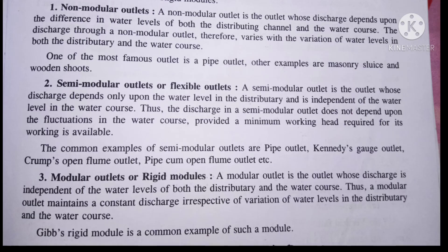So sabse pahla hai non-modular outlet. Ab hum dekhenge ki ek outlet pipe kis tarah se non-modular aur semi-modular outlet ke liye kaam karti hai. Is outlet mein paani water course se aata hai, aur water course mein paani canal se aayega. Ab non-modular outlet par paani depend karta hai water course ke level par. Matlab agar water course mein jo water level hai woh agar zyada hoga, to outlet par paani kam aayega. Aur agar water course ka jo level hai, woh kam hai, to outlet par paani zyada aayega — ye opposite hoga. So jo farmers hote hain, agriculturists hote hain, woh kya karte hain ki water course ka jo level hai woh decrease kar lete hain, jis se outlet par paani zyada aata hai. Isse kya hota hai ki canal ke outlet se paani zyada niklega, aur agar jahakar woh tail par, uski kami bhi aayegi — matlab tail par jo water level hai woh kam ho jaata hai. Farmers ko aisa nahi karna chahiye — jitna paani required hai, utna hi lena chahiye.